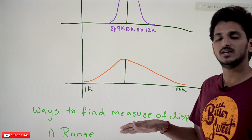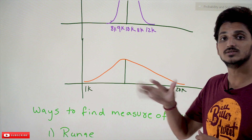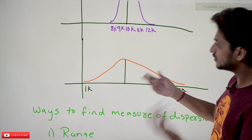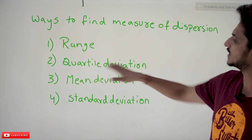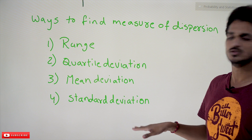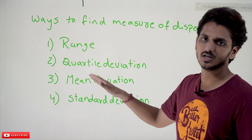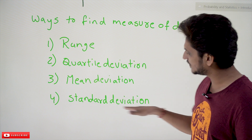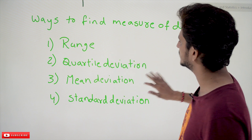As the spread increases, there is more volatility, meaning more uncertainty in our data. So how do you find the measure of dispersion? There are different ways — range, quartile deviation, mean deviation, and standard deviation. In coming classes we are going to discuss these methods and which equations to use.